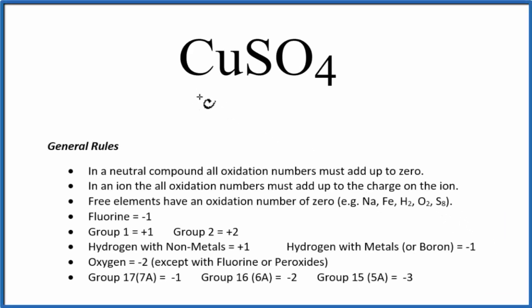To find the oxidation numbers for each of the elements in CuSO4, we'll use these general rules here. First off, in a neutral compound, and this is a neutral compound because we don't have a plus or minus charge like we would with an ion, all of the oxidation numbers for the CuSO4 they'll add up to zero.